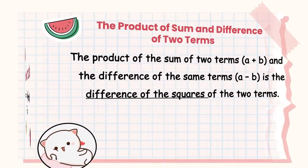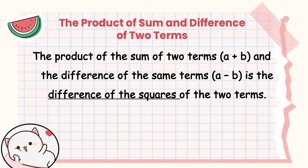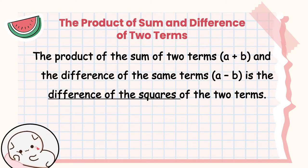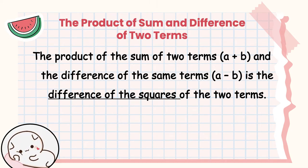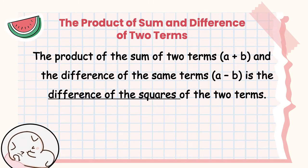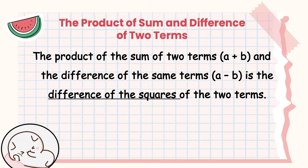The product of sum and difference of two terms — where the first factor is (a + b) and the second factor is the difference of the same terms (a − b) — gives us the difference of the squares of the two terms. As we multiply (a + b)(a − b) using the FOIL method or distributive method, we arrive at the difference of two squares.